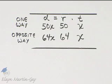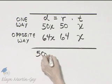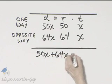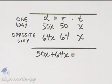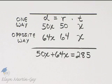The answer is yes. We haven't used the fact that we want a total distance of 285 miles. That's how we translate to an equation. This distance, 50X plus the other train's distance, 64X, should equal the total distance, 285, standing for the 285 miles.